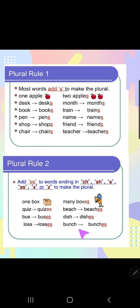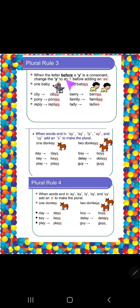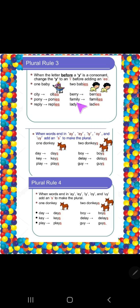So wherever words end in ch, sh, s, x, or z, add 'es'. Rule number three: when the letter before 'y' is a consonant, change the 'y' to 'i' before adding 'es'. For example: baby → babies (ies added, y removed). City → cities, pony → ponies, reply → replies, bury → berries, family → families, lady → ladies.